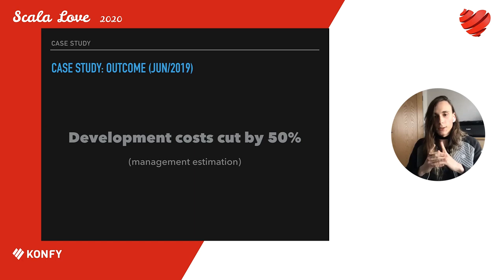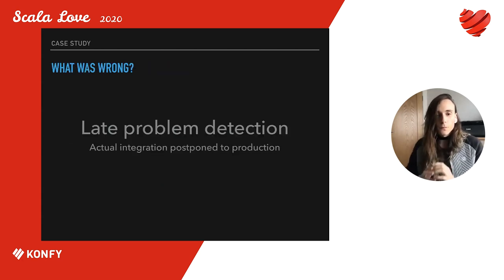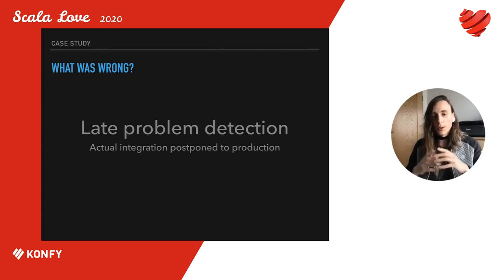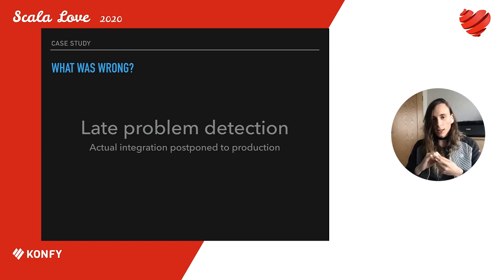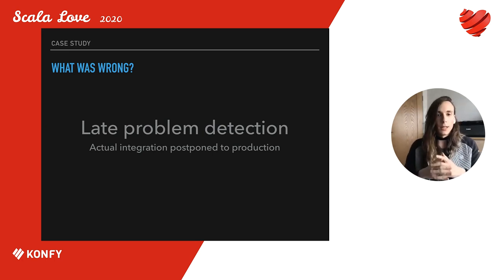By June of 2019 we managed to reduce the development cost by 50% according to their own estimation. That number was quite impressive when I heard it. I'm going to tell you what led to it. You can't actually squeeze a 50% improvement out of an already great process — these numbers appear when you're getting rid of blocker issues. So what was that big blocker holding the team back so much?